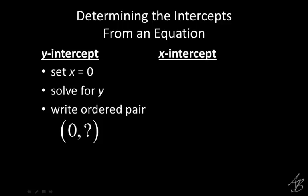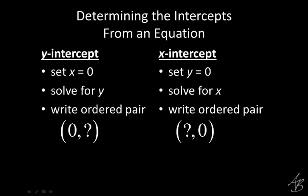So that ordered pair is going to look like zero comma something. The Y-intercept is always going to be zero comma something. And then for the X-intercept, we're going to do all the same things except we're going to set Y equal to zero and then solve for X. Once we do that, we're going to have an ordered pair: something comma zero.